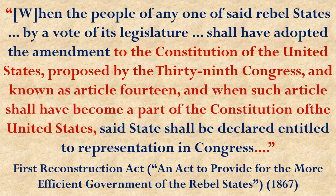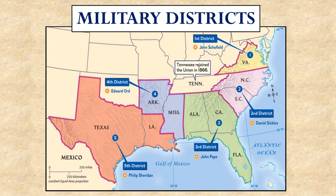They went even further — dividing the South into military districts, each with an army encamped there and generals in charge in place of state governments. They told them that the military would remain in charge unless they gave in and approved the 14th Amendment.